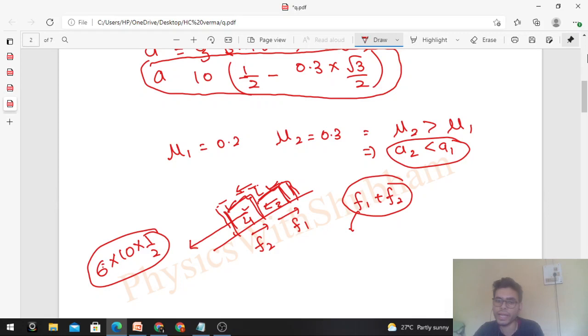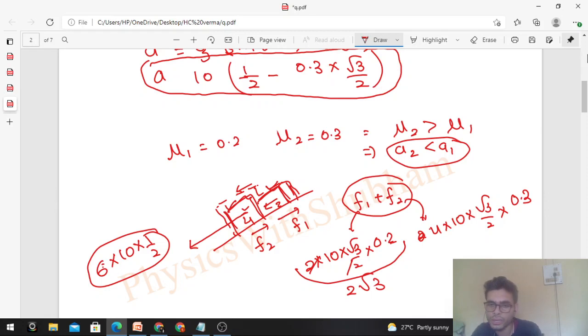F1 is m2 g cos theta into mu1. So m2 into g10 into cos theta, which is root 3 by 2, into mu1. Now mu1 is 0.2. F2 is mg cos theta. M is 4 into g into cos theta into mu2. Now mu2 is 0.3. So F1 is 2 root 3 and F2 is 6 root 3. So what is F1 plus F2? The limiting value of friction on the system - that will be 8 root 3.